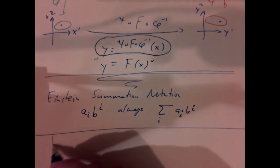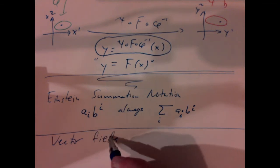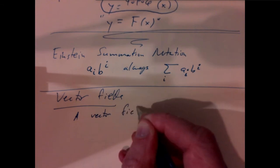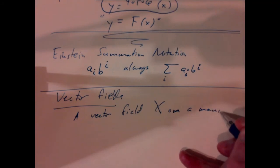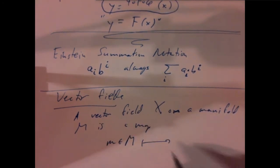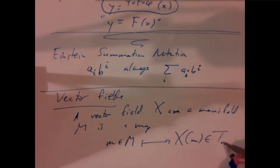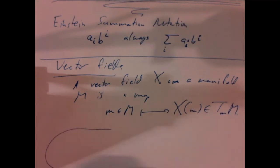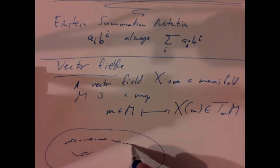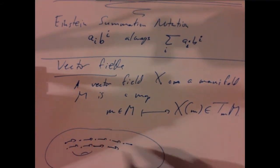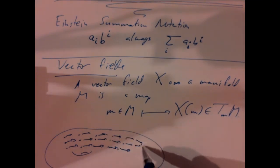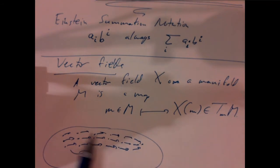We're finally ready to think about vector fields. A vector field X on a manifold M is a map that takes any point m in M and assigns to it a tangent vector X(m) in the tangent space at m. The picture we have in mind is of a manifold with a little velocity vector at each point — like the velocity of a fluid filling the entire manifold, with a vector defined at every point (possibly the zero vector).